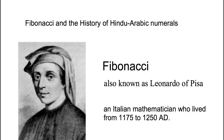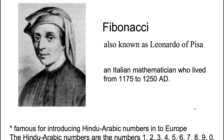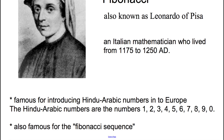This is a picture of Fibonacci from the internet. He's also known as Leonardo of Pisa. He was an Italian mathematician who lived from about 1175 to 1250 AD. Fibonacci is famous for introducing the Hindu-Arabic Numbers into Europe — the digits we're all familiar with: 1, 2, 3, 4, 5, 6, 7, 8, 9, and 0, written this way. He's also famous for the Fibonacci Sequence that we'll look at in this video as well.